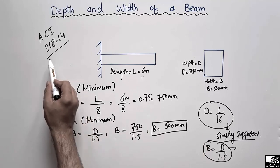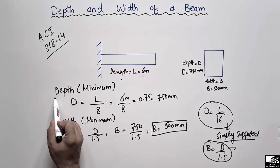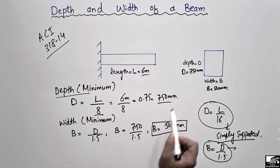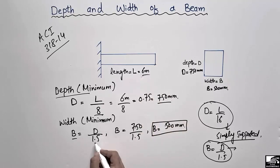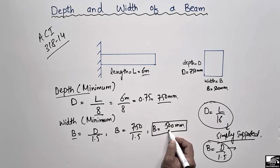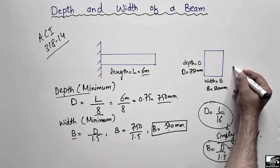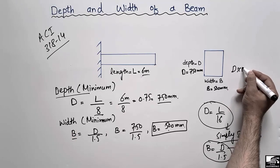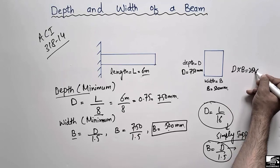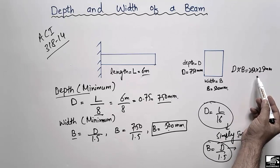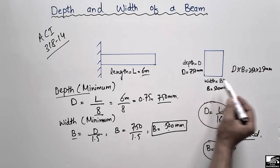So according to ACI 318-14, the minimum depth of the cantilever beam is equal to L by 8 — for 6 meters it is 750 mm — and the width is d by 1.5, which comes out to 500 millimeters. It should also be noted that the minimum dimensions for a cantilever beam or simply supported beam are 250 mm × 250 mm.